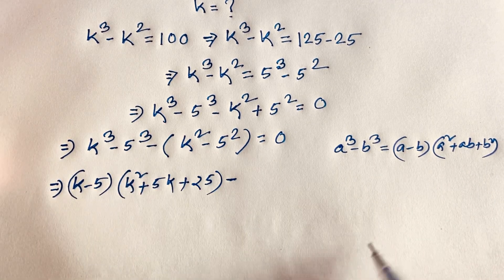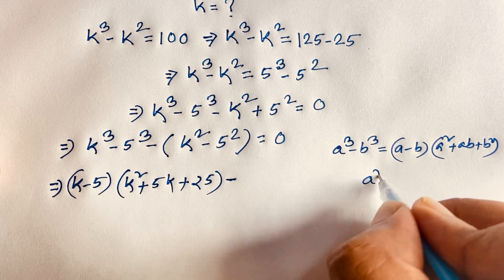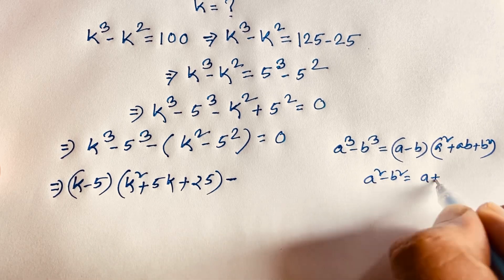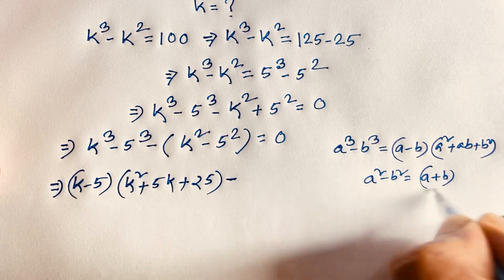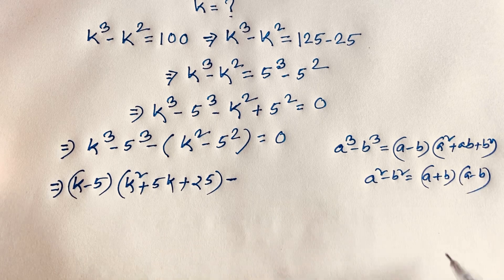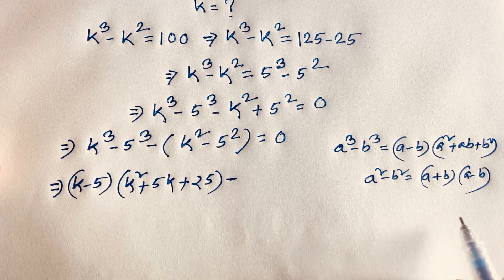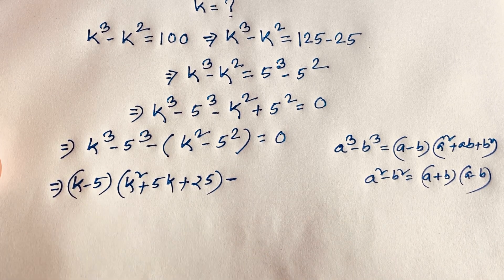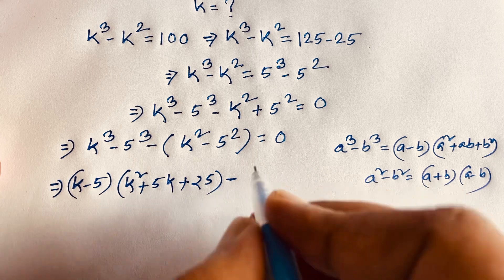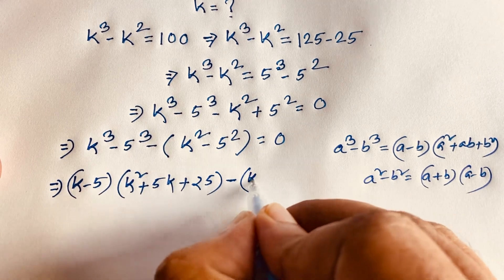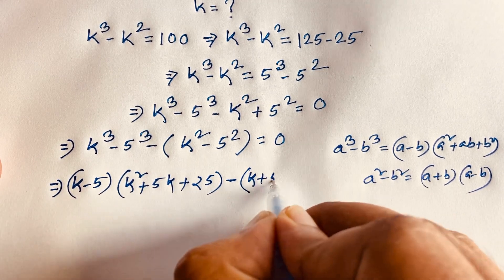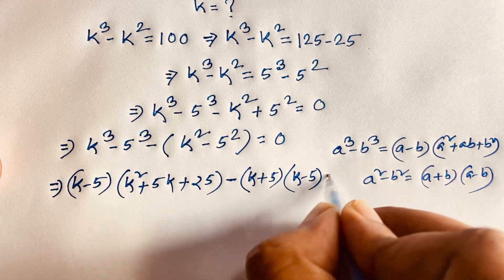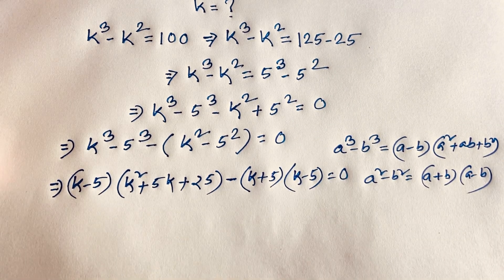And for k² minus 5², we know that a² minus b² equals (a + b)(a - b). So k² minus 5² equals (k + 5)(k - 5) is equal to 0.